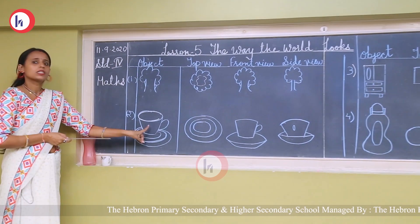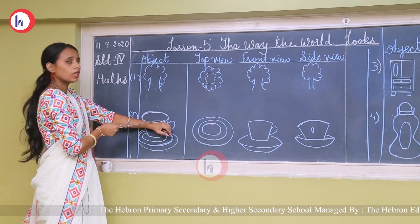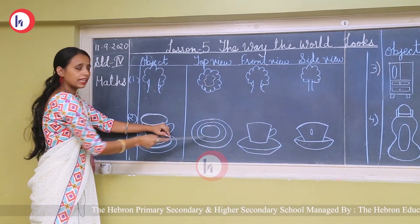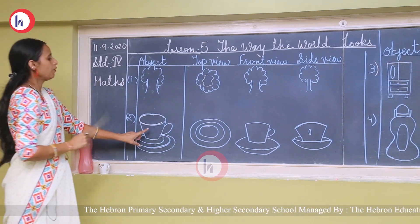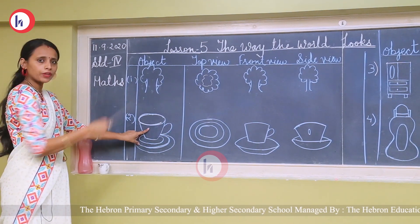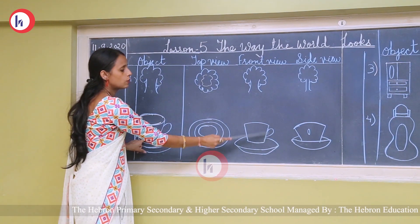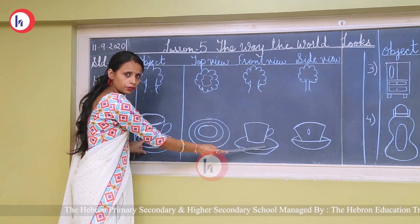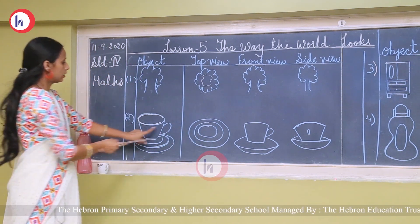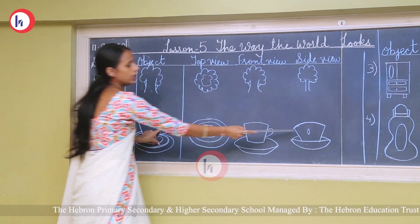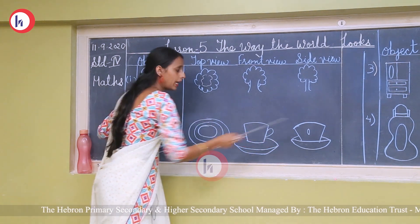The second example is cup saucer. When we see from the top, only this part we can see. When we see from the front, so this part we can see — this is the front view. And when we see from the side, it looks like this.